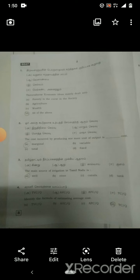The first one: The cost incurred by producing one more unit of output is marginal cost. The main source of irrigation in Tamil Nadu is Option A. Identify the formula of estimating average cost, Option D, TC by Q.